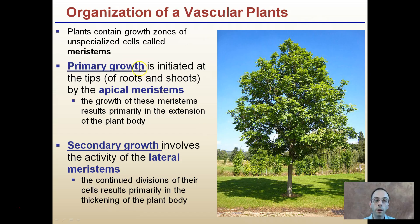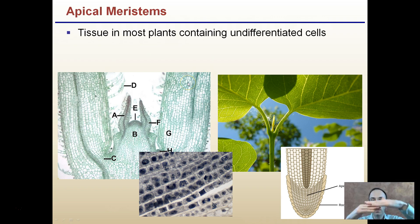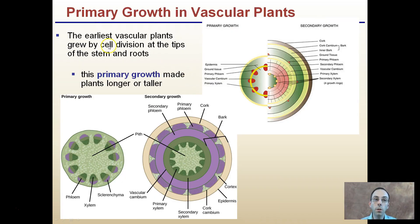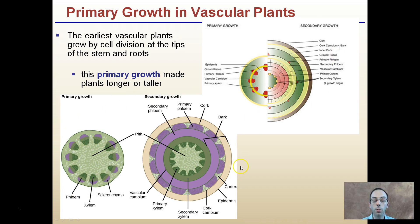Remember, this is all involved in the primary growth phase — growing with the height of the plant. This primary growth makes plants longer or taller. It's that vertical growth, but please don't forget about the growth that's also occurring below the soil line. Right now we're just focusing on that primary growth.